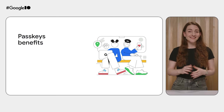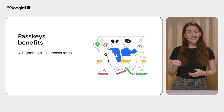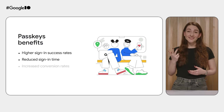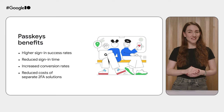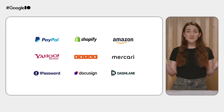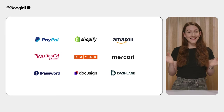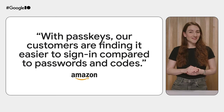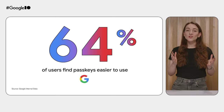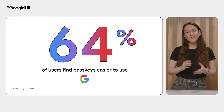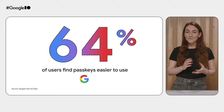Sites that implement passkeys as an additional sign-in method are seeing a number of benefits, such as higher sign-in success rates, reduced sign-in time, increased conversion rates, and reduced costs of separate two-factor authentication solutions. The number of apps and websites that support passkeys keeps growing and includes PayPal, Kayak, and Amazon. Amazon customers find it easier to sign in with passkeys compared to passwords and codes. Google accounts users feel the same, and 64% of them find passkeys easier to use than passwords and two-step verification.